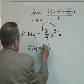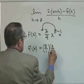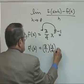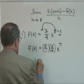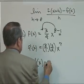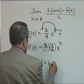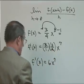8, nothing wrong with making it a fraction, so you don't forget to cancel. So the answer to that is f prime of x is equal to 6x to the 7th.